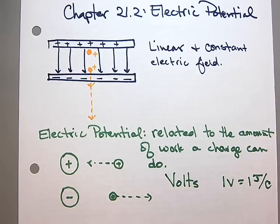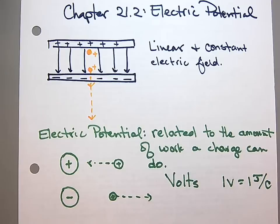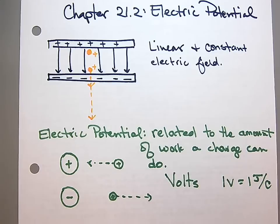One volt is one joule per coulomb. So if I have one volt of electric potential, one coulomb of charge could do one joule of work. If I have a six-volt battery, that's how much voltage has been built up, and one coulomb of charge would do six joules of work. Actually, I'm going to have to do some research on that because a coulomb of charge is very large — I don't think a battery even has a coulomb of charge — and it can do more than six joules of work.